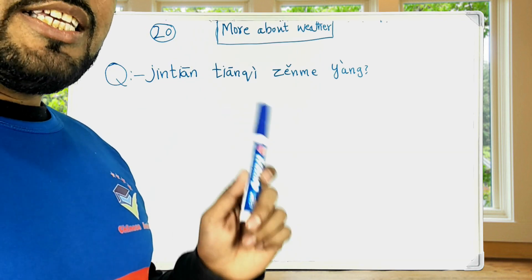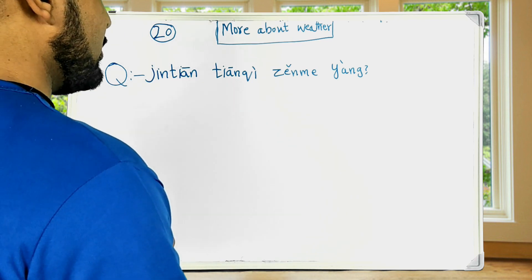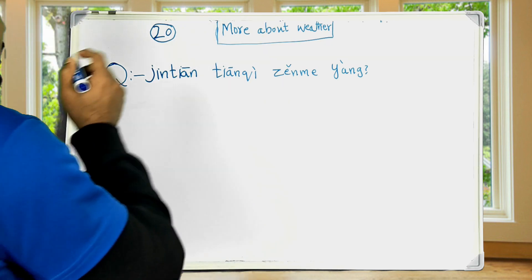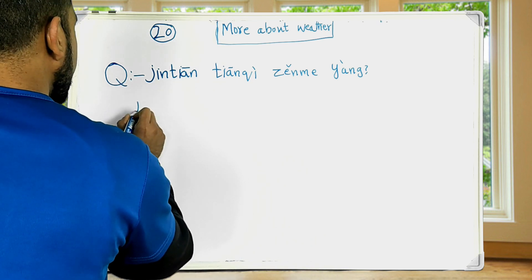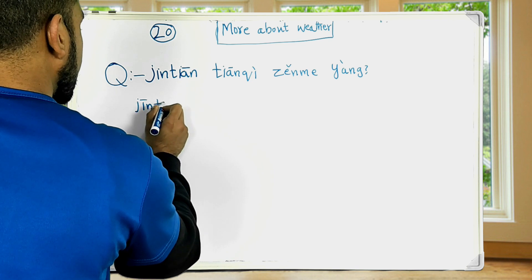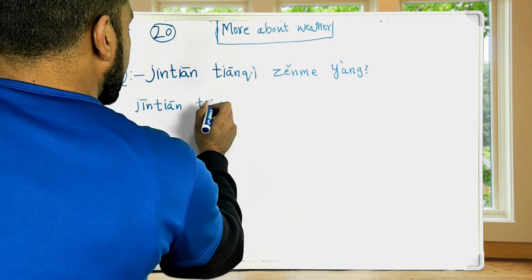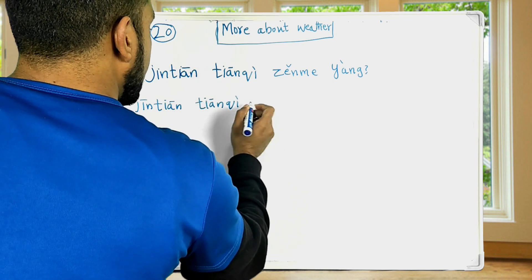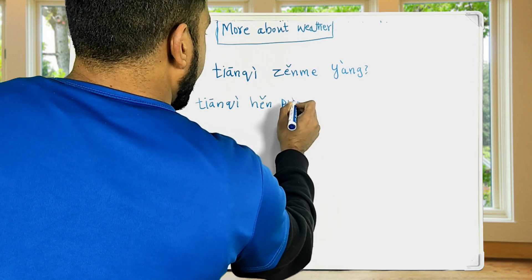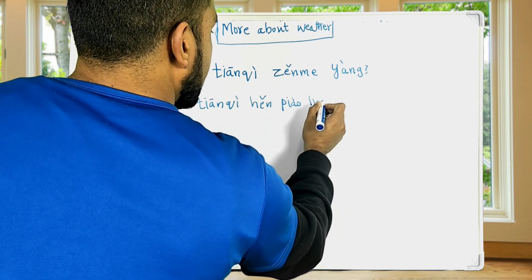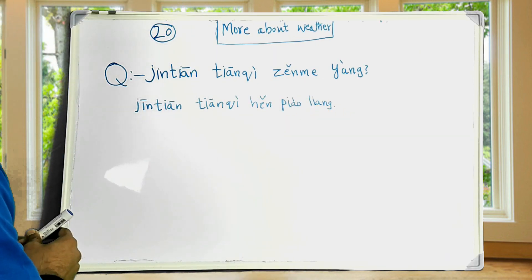Now we will learn these five answers in full form. 今天天气怎么样? How's the weather today? It's beautiful — today the weather is very beautiful: 今天天气很漂亮.